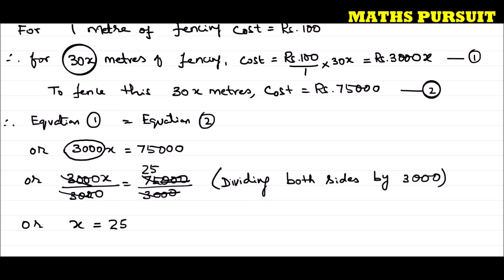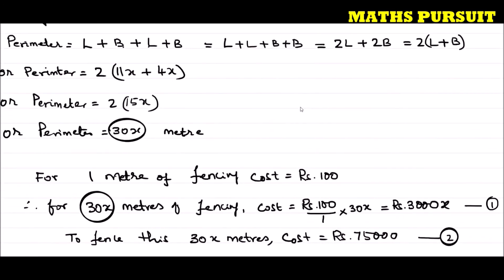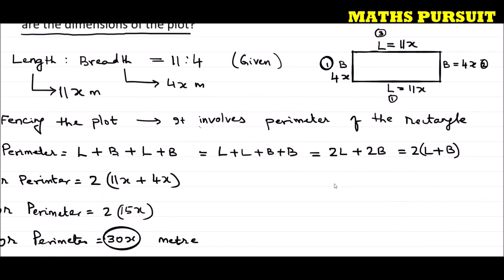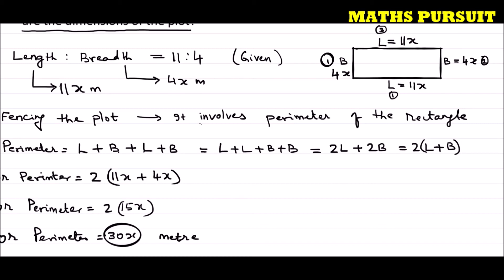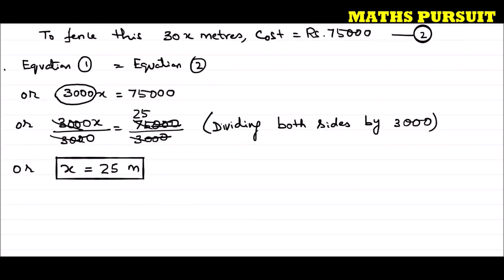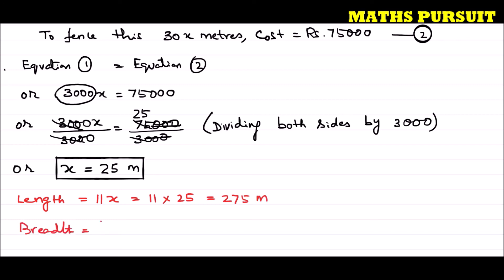So x = 25 meters. Now replacing this value: Length = 11x = 11 × 25 = 275 meters. Breadth = 4x = 4 × 25 = 100 meters.